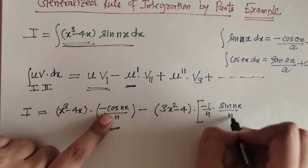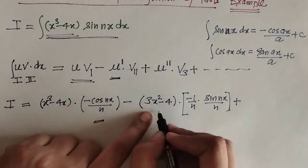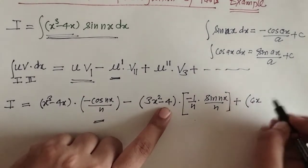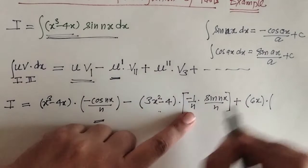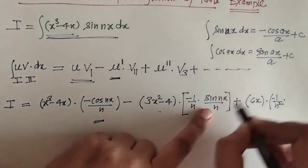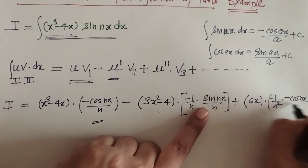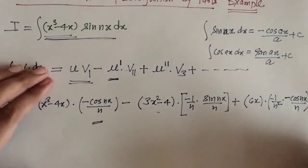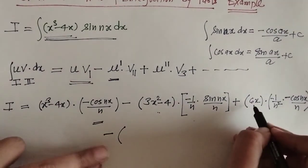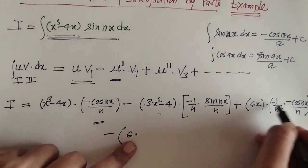Next, plus the next term: we take the derivative of (3x² − 4), which is 6x, into −(1/n) times (1/n), giving −(1/n²) into the sine integral, which is again −cos(nx) upon n. Then the next term is minus, and the derivative of 6x is 6, giving a minus-minus which becomes plus.